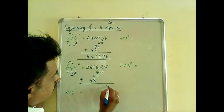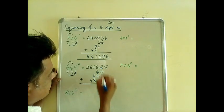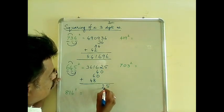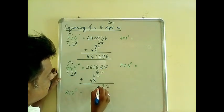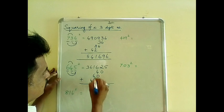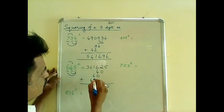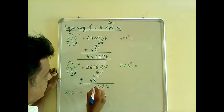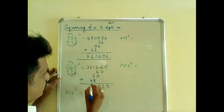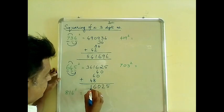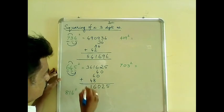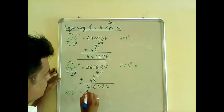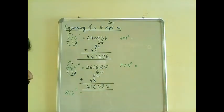Now add. You get 5. This is 2. This is 10 — balance 1. 1 plus 1 is 2. 2 plus 6 is 8. 8 plus 8 is 16 — balance 1. That's 11 — balance 1. 1 plus 3 is 4. So the answer is 416,025.